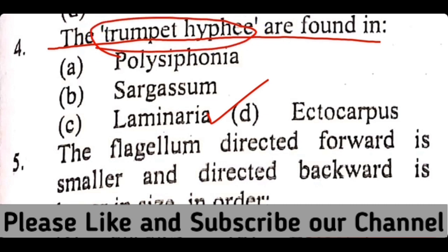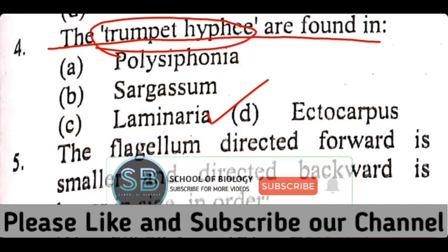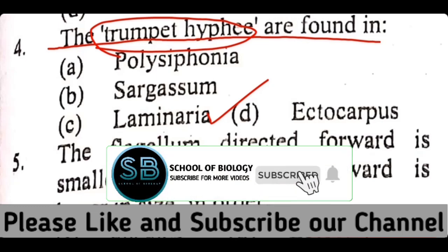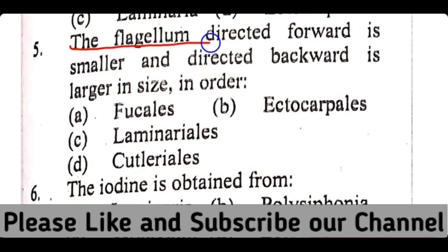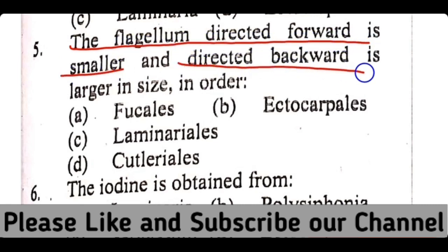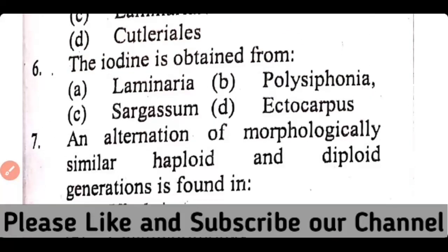Before moving to the next question, please subscribe to the channel if you haven't already. Question number 5. The flagellum directed forward is smaller and the flagellum directed backward is larger in size — in which order? The correct answer is the Phaeophyceales order of brown algae, in which the forward flagellum is smaller and the backward flagellum is larger in size.